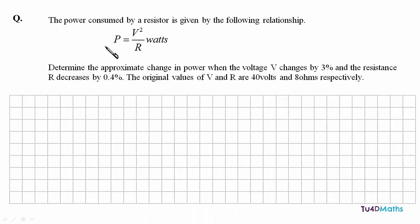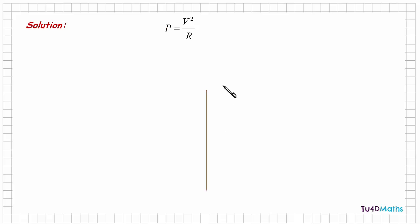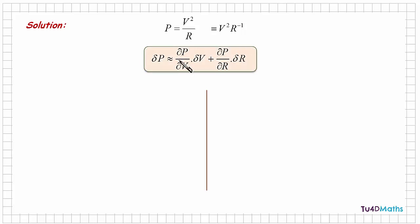In the next question, we are given the standard equation for the power consumed by a resistor, which is v squared over r. And we are asked to determine the approximate change in the power when the voltage v changes by 3% and the resistance r decreases by 0.4%. The original values of v and r are 40 volts and 8 ohms respectively. So we rewrite the power as v squared times r to the power of minus 1, and the approximate change in power is given as the rate of change with respect to voltage times dv, plus the rate of change with respect to resistance times dr.